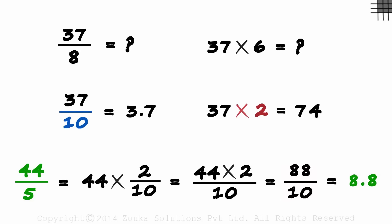So instead of dividing a number by 5, multiplying it with 2 and dividing it by 10 is a tad bit faster.